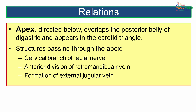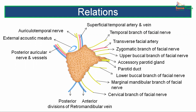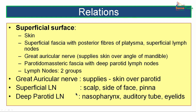The apex is directed downwards and overlaps the posterior belly of digastric muscle, appearing in the carotid triangle. Structures passing through the apex include the cervical branch of the facial nerve, the anterior division of the retromandibular vein, and the formation of the external jugular vein.